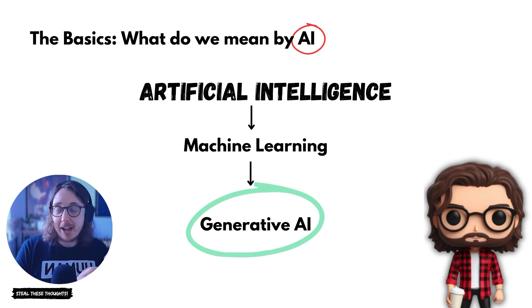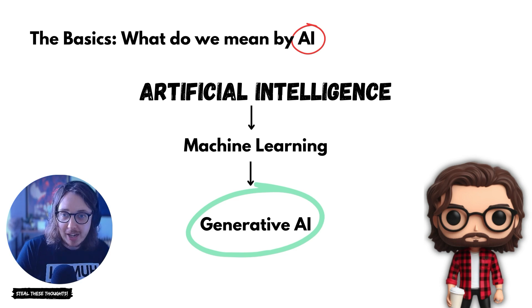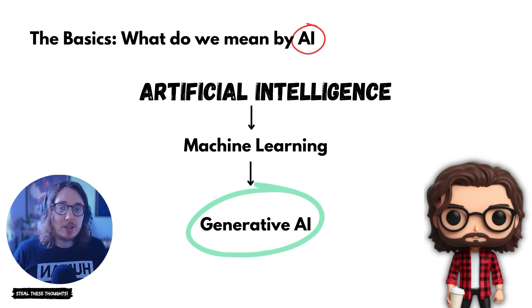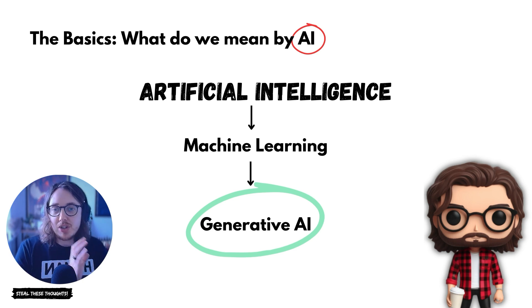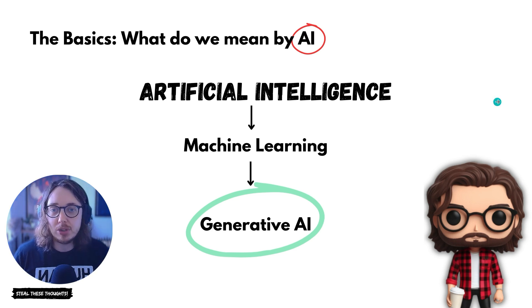When people say AI in the last two years, they're mainly talking about generative AI technologies. By generative AI technologies, we are talking about all of the new features you're seeing in lots of apps — ChatGPT, Microsoft Copilot, Perplexity, Google, all of this stuff. These are generative technologies, generating new content based off of access to different data sources.